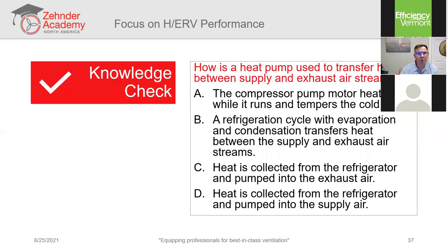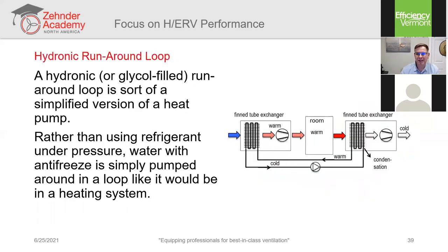The hydronic runaround loop is much less common but does exist. It's not much different from a vapor compression cycle, except you're not compressing vapor — you're pumping water through two separate coils in two different plenums, collecting energy from one and delivering it to the other airstream.